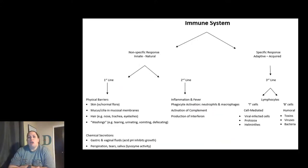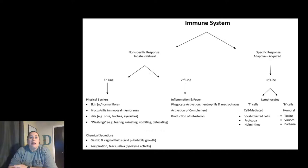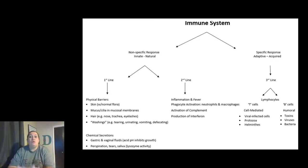The immune system is broken down into two branches. We have the innate or non-specific immune response — this is the natural immune response that everybody is born with, and it consists of the first and second line of defense. On the other hand, we have the specific immune response — this is the adaptive or acquired response that you develop over time as you're exposed to things. This part of your immune system changes and makes yours different from everyone else's, and this is the third line of defense.